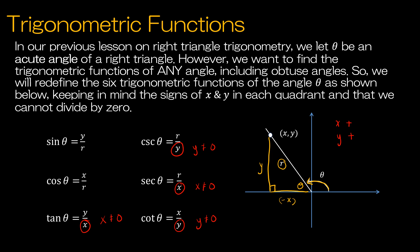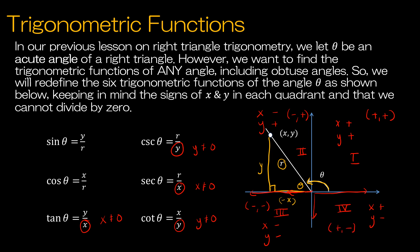In the second quadrant, x is going in the negative direction, so x is negative, and y is still positive. In the third quadrant, x is negative and y is also going down, so both are negative. And in the fourth quadrant, x is going in the positive direction but y is going in the negative direction — positive, negative. Keep that in mind as we work through this lesson.